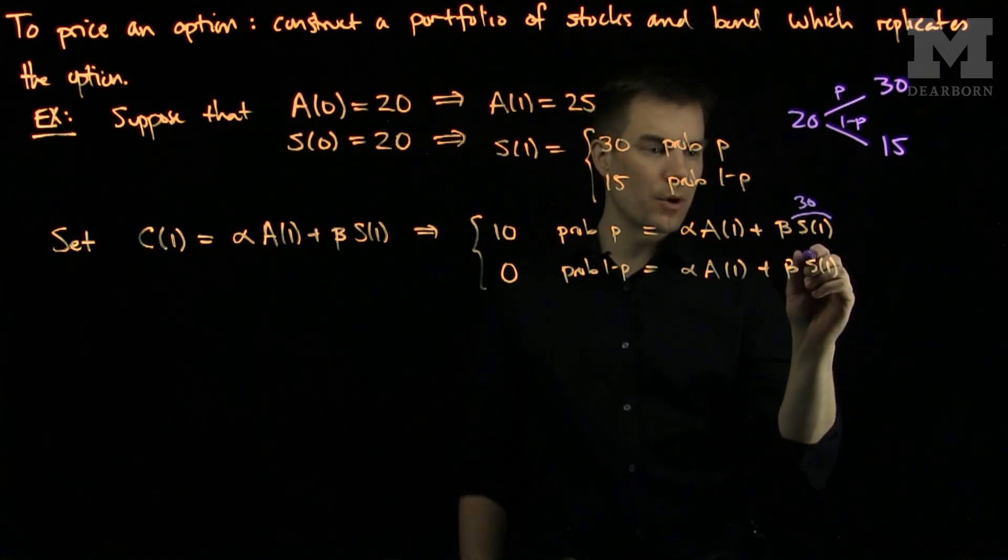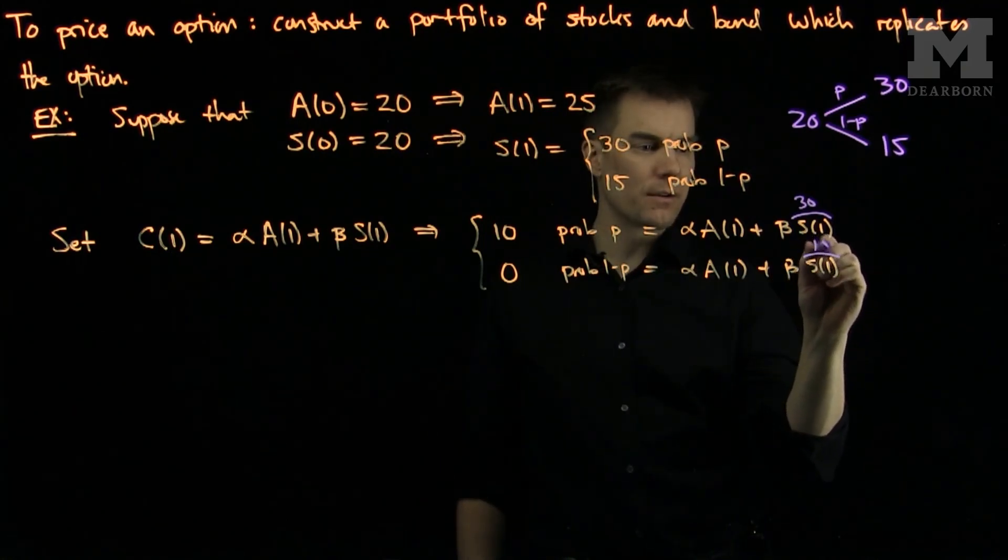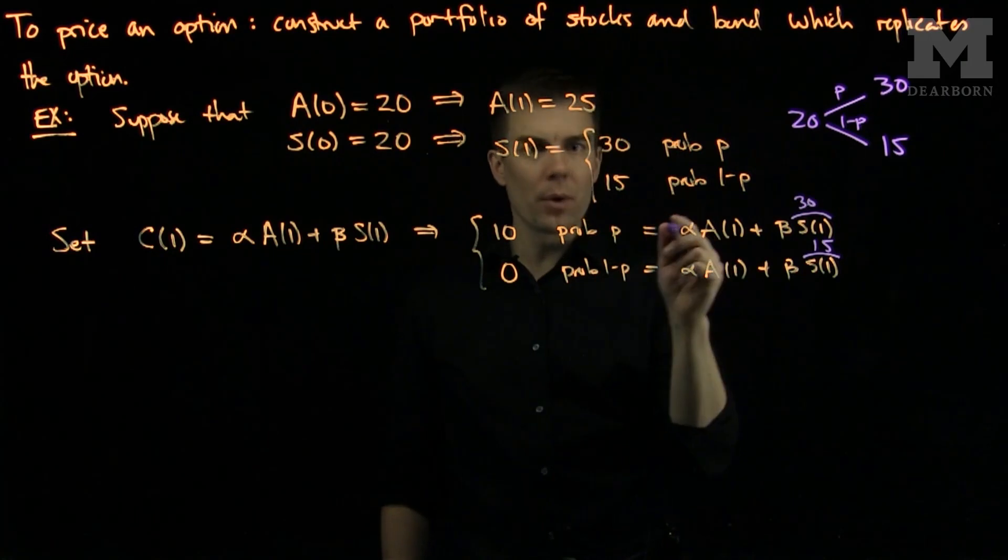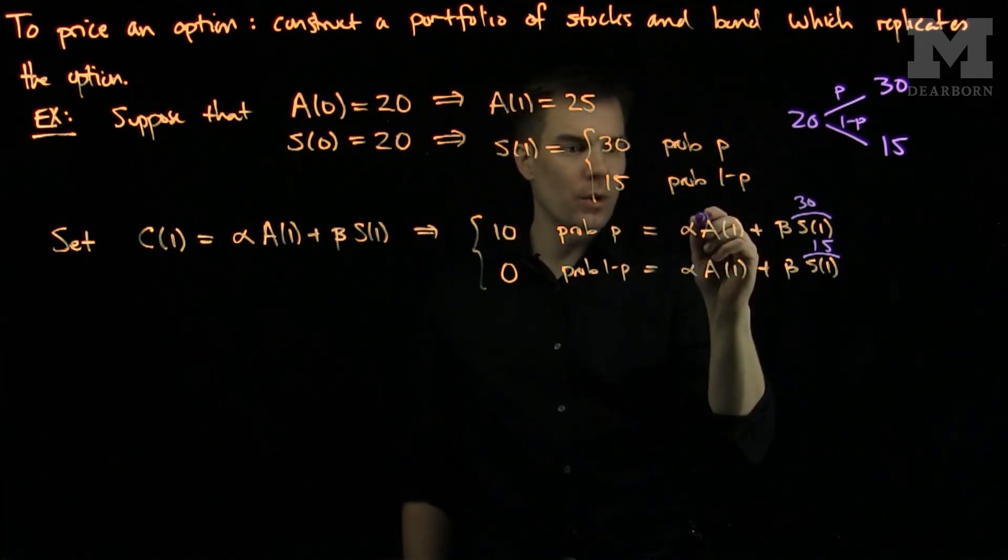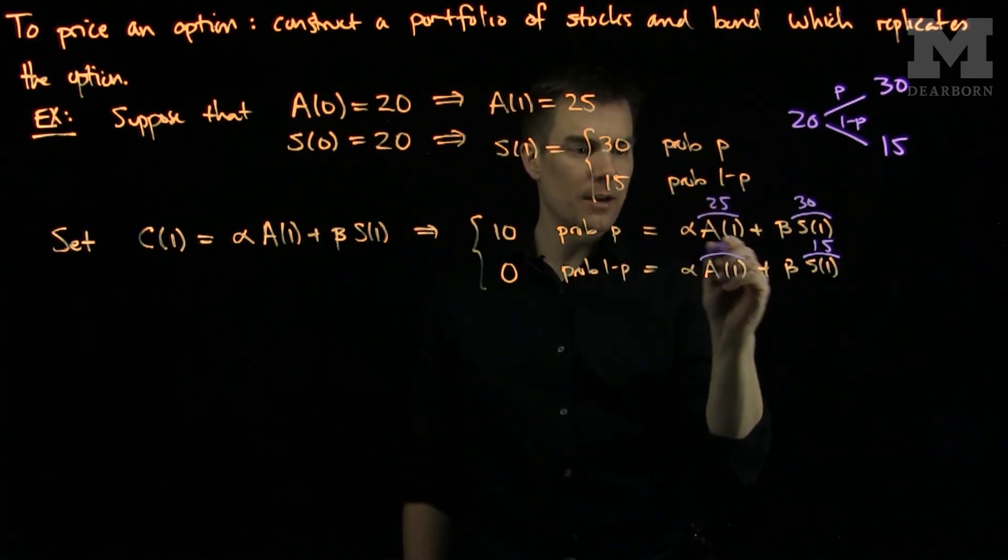In this case, when we get a gain of nothing, we don't execute the option, S(1) is 15. And in both cases, A(1) is 25.